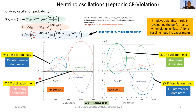When you study this relationship, you end up with a distribution that depends on the theta-one-three values. Assuming theta-one-three is small, at the first oscillation maximum the CP interference dominates over the other two terms, while at the second oscillation maximum the solar term dominates. For small theta-one-three, it is better to place the detector at distances corresponding to the first oscillation maximum. For large theta-one-three, the CP interference dominates at the second oscillation maximum, making it much better to place the detector there.